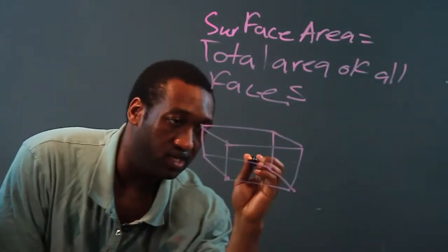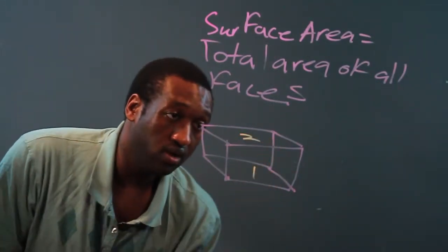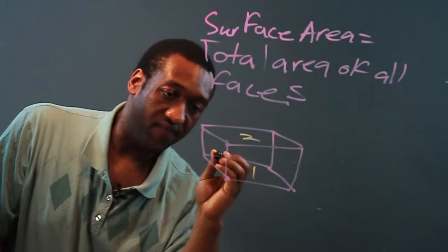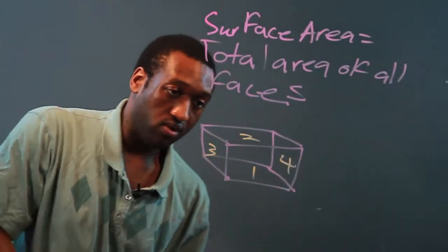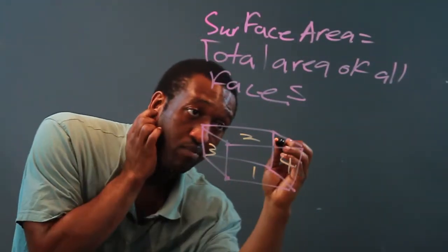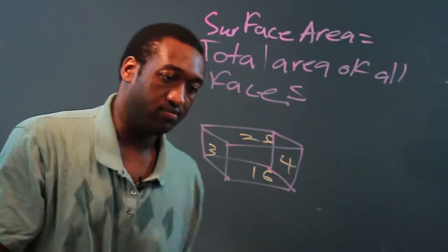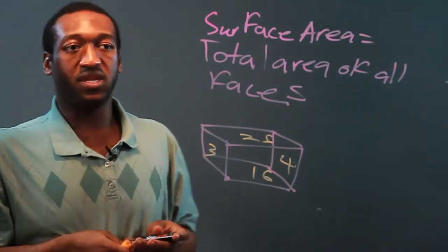The front and back faces will be one and two. The side faces will be three and four. And the top and bottom will be five and six. So rectangular solids have six faces.